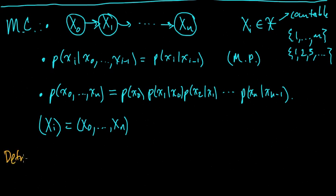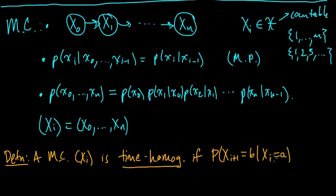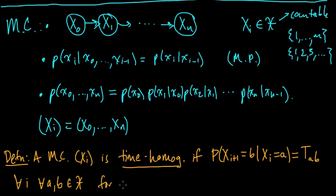The first term we need to define is time homogeneous. We say that a Markov chain Xi is time homogeneous if we have the following property: the probability that X_{i+1} equals some value B, given that X_i equals some value A, equals a number T_{AB}, and this holds for any i from 0 to N minus 1, and for any A and B in X. This is for any i, and for some matrix T.